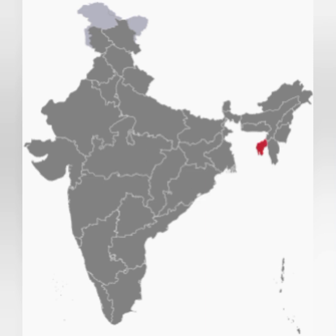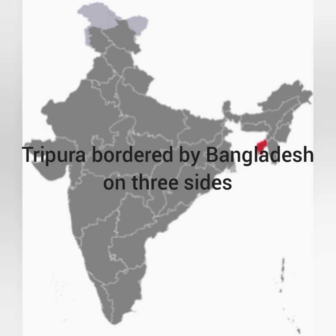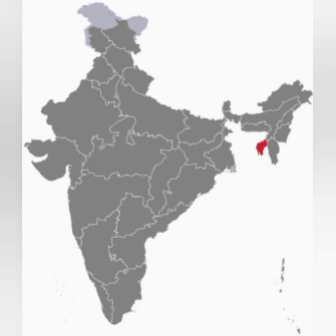The second question is: which state of India has an international boundary on all its three sides? The answer is Tripura. Tripura is bordered by Bangladesh in the north, west, and the south. It also has an international border on three sides, while Assam and Mizoram are located on the eastern part of Tripura.